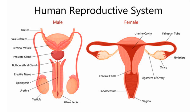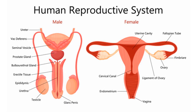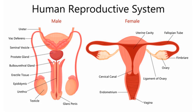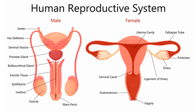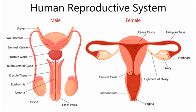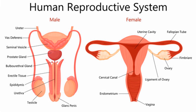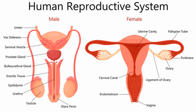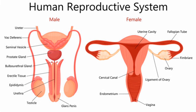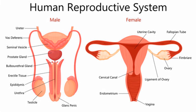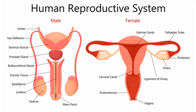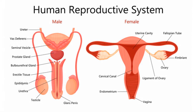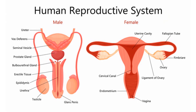Starting with the basics, human reproduction involves two key players: the male and female reproductive systems. Each system is a marvel of biological engineering, with parts designed for specific functions. From the testes and ovaries, where gametes or sex cells are produced, to the uterus, where the miracle of life unfolds, every part has a crucial role to play.